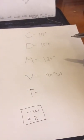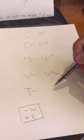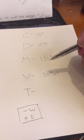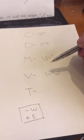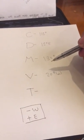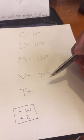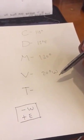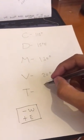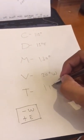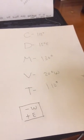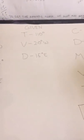To find the true course, we need to subtract: 130 degrees minus 20 degrees west equals 110 degrees.